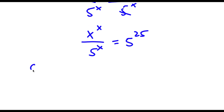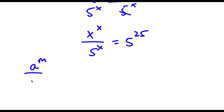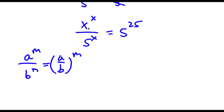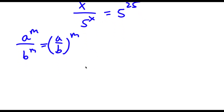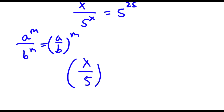Using the rule that a to the power of m over b to the power of m equals (a over b) to the power of m, I have x to the power of x over 5 to the power of x, which equals (x over 5) to the power of x, and this equals 5 to the power of 25.